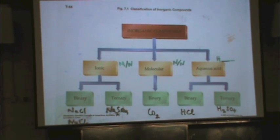Then there's molecular. There's only one subcategory for it that we'll see, and that's the binary. Two different types of atoms. A typical example of CO2, carbon dioxide.